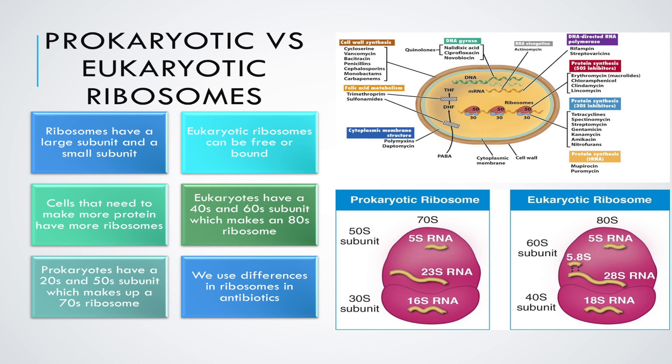So now let's sum up the important facts of this video. Prokaryotic ribosomes differ from eukaryotic ribosomes. Prokaryotes have a 70s ribosome made up of a 30s small subunit and a 50s large subunit. Eukaryotes have an 80s ribosome made up of a 40s subunit and a 60s subunit. We can use these differences in ribosomes when using antibiotics which target the 30s and 50s subunits and don't affect our ribosomes.